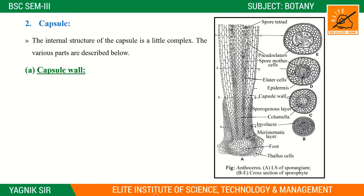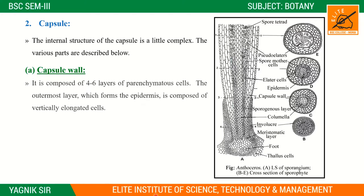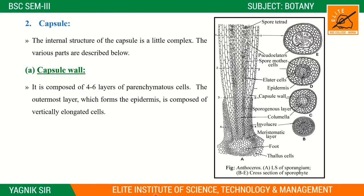The capsule wall is composed of four to six layers of parenchymatous cells. The outermost layer forms the epidermis, and this layer is called the epidermis. It is made up of elongated cells.